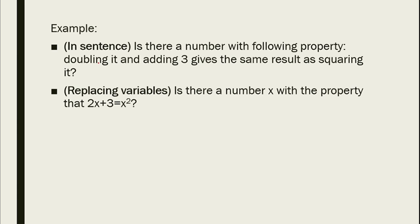You don't want to restrict it to considering only particular concrete values. The advantage of using variables is that it allows you to give a temporary name to what you are seeking so that you can perform concrete computations with its help to discover its possible values. For example, the sentence 'Is there a number with the following property: doubling it and adding three gives the same result as squaring it?' is easier to understand when written with a variable as: Is there a number x such that 2x + 3 = x²?